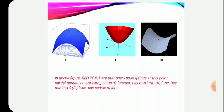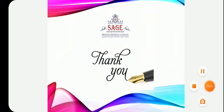So these are the three graphs representing maximum, minimum, and saddle point. We have to understand these graphically very well and then work on the related questions. Thank you very much.